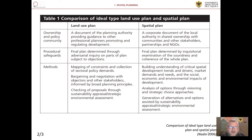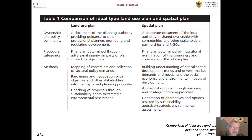For the procedural safeguards, the role of the land use plan is a final plan determined through adversarial inquiry on parts of the plan subject to objection. The role of spatial planning is a final plan determined by inquisitorial examination of the soundness and coherence of the whole plan. For the methods, the role of the land use plan is mapping of constraints and collection of sectoral policy demands, bargaining and negotiation with objectors and other stakeholders informed by broad planning principles, and checking of proposals through sustainability appraisal and strategic environmental assessment.